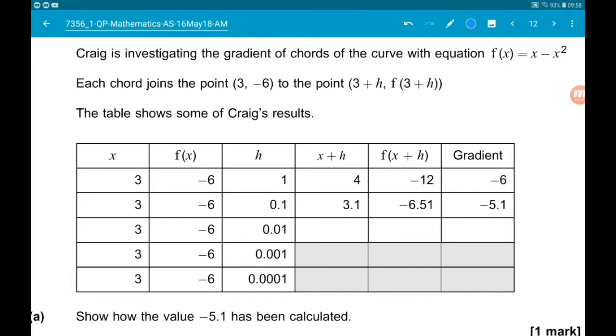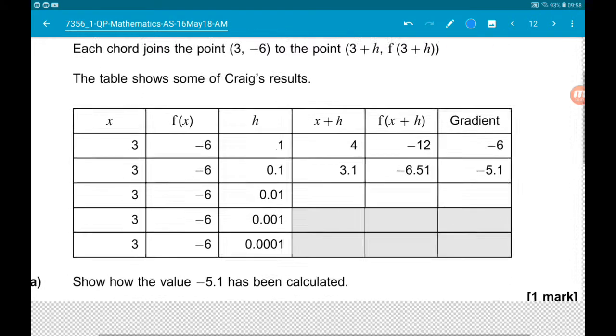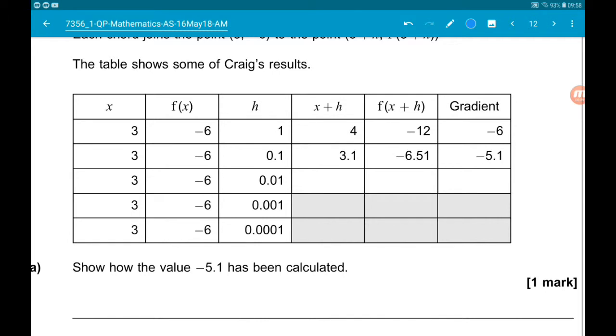Each chord connects the point (3, -6) to the point (3+h, f(3+h)). The table shows some of his results. Part A asks us to show how the value -5.1 has been calculated.